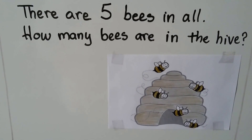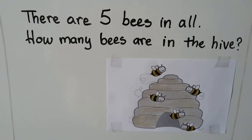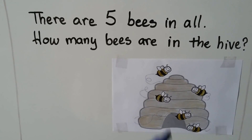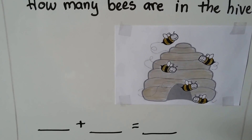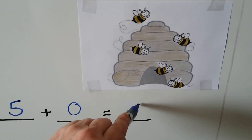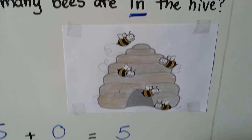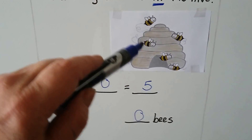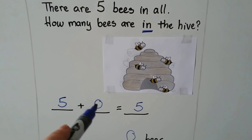There are five bees in all: one, two, three, four, five. How many bees are in the hive? If there are five bees in all and we can see them all, then there are zero bees in the hive because we see all five of them outside. Five bees plus zero bees is five bees. How many are in the hive? Zero. This is the zero that's in the hive.